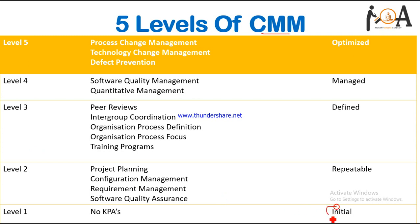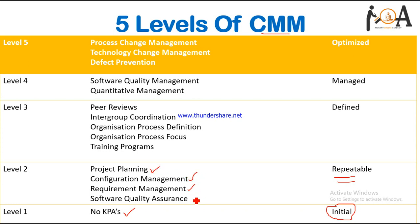There are 5 levels in CMM. The first one is Initial — in this, no KPAs are there. After that is level 2, Repeatable. In Repeatable there are several KPAs: project planning, configuration management, requirement management, and software quality assurance.